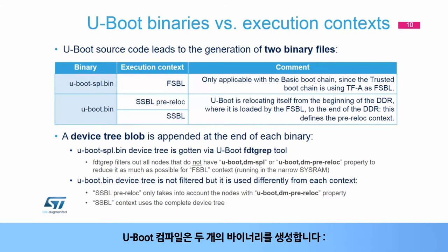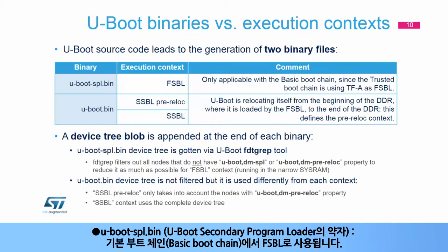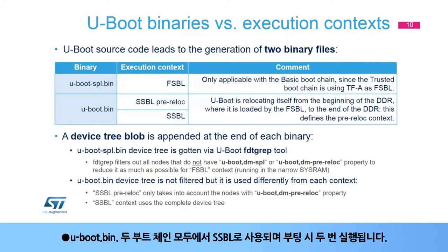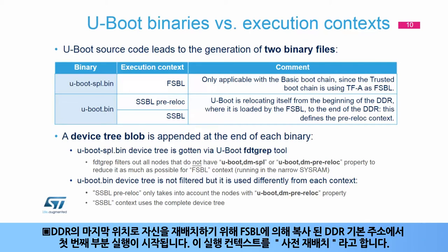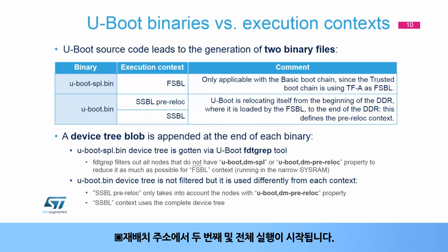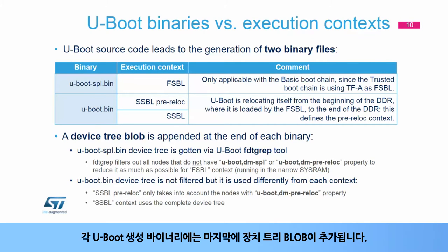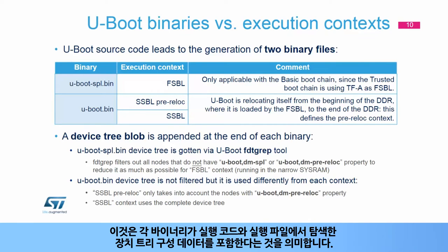U-Boot compilation leads to the generation of two binaries: u-boot-spl.bin, the U-Boot Secondary Program Loader, used as FSBL in the basic boot chain; and U-Boot.bin, used as SSBL in both boot chains, executed twice at boot time. A first partial execution occurs from the DDR base address, where it has been copied by the FSBL in order to relocate itself to the end of the DDR — this execution context is called pre-reloc. A second and full execution then starts from the relocation address. Each U-Boot generated binary has a device tree blob appended at the end.